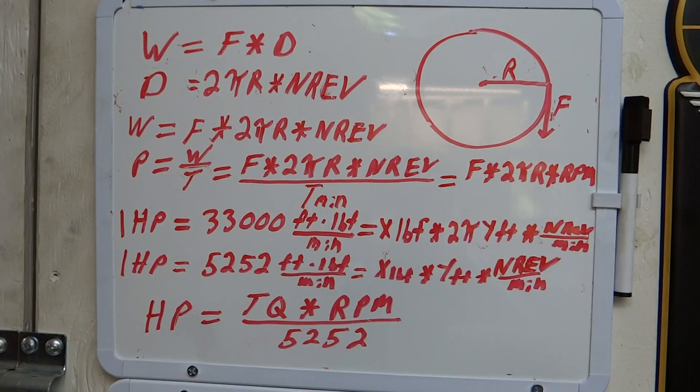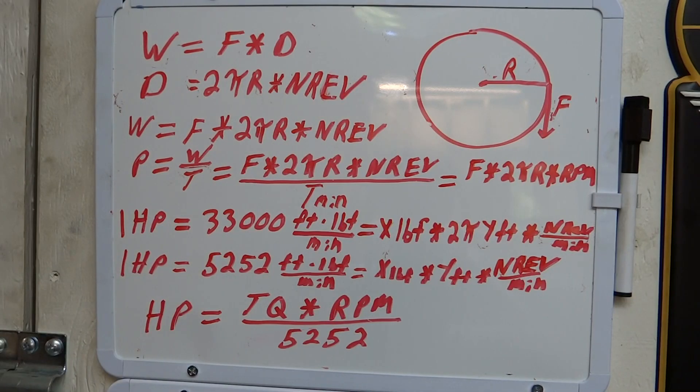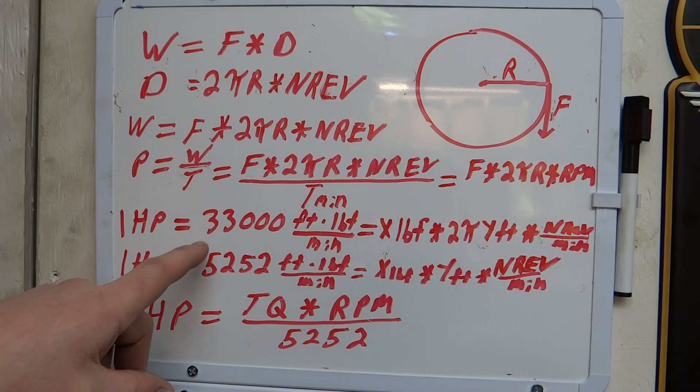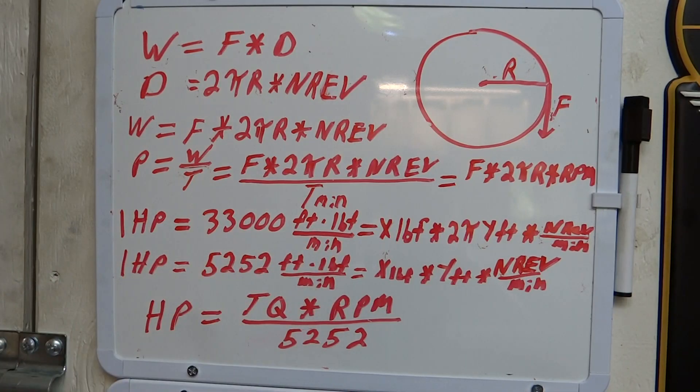Now we have to look at what a horsepower is. There's a lot of history in terms of how this 33,000 came to be. If you want, that's kind of an interesting history lesson, but I'm not going to get into that. What I am going to say is one horsepower is equal to 33,000 foot-pounds of force per minute. So that would be like picking up something that weighed 33,000 pounds, lifting it up one foot, and doing that in one minute. That's a horsepower.